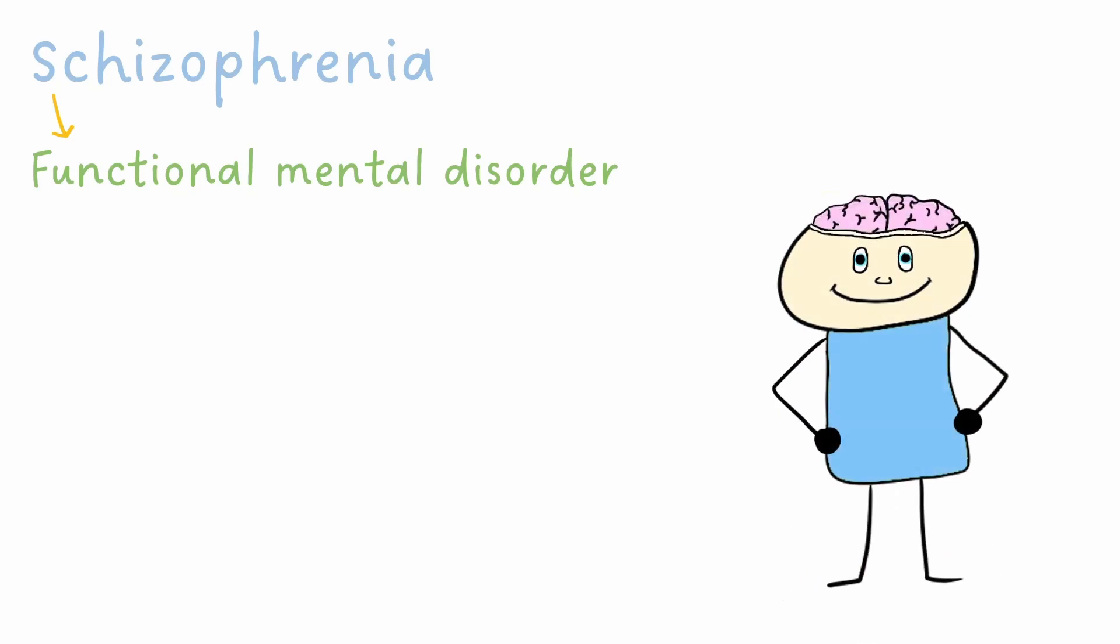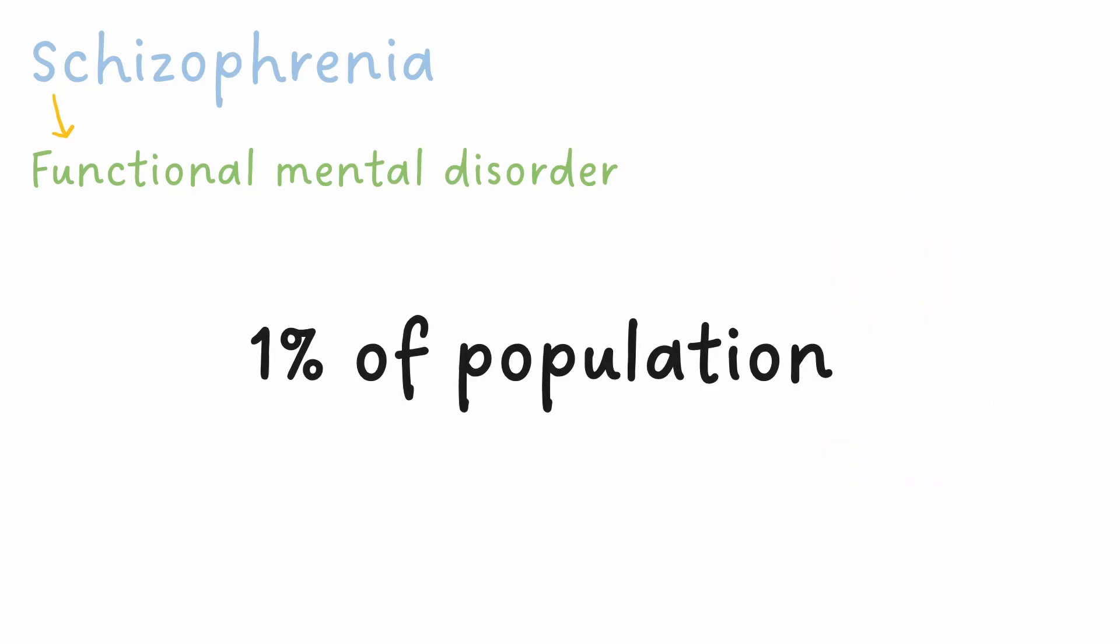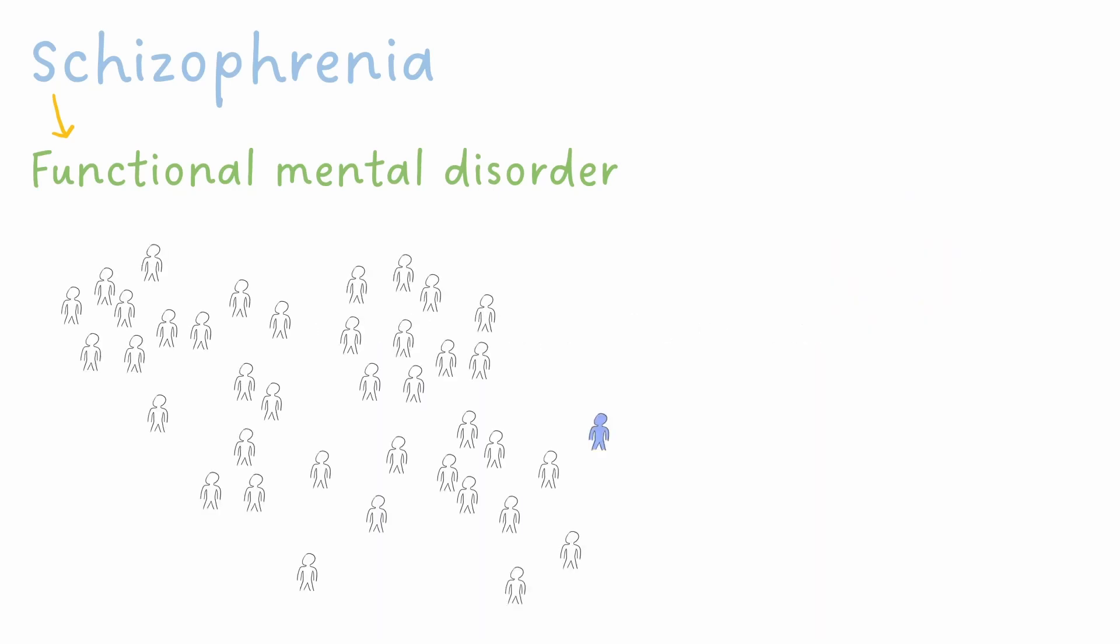Schizophrenia is a functional mental disorder, which means it's a result of impaired brain function rather than a structural problem with the brain. It affects around 1% of the population, or one in a hundred individuals.